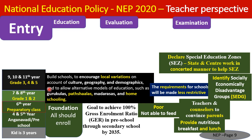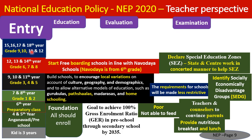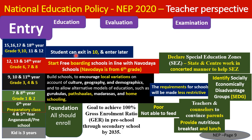After Grade 5, for areas with SEZ and disadvantaged groups, free boarding schools can be started so that children can study there. In secondary education, there is also an exit policy at Grade 8 or Grade 10 — students can exit and come back. This flexibility is given in school education from age four to eighteen.